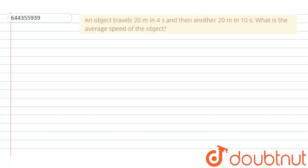Hi everyone, the question is given: An object travels 20 meters in 4 seconds, then another 20 meters in 10 seconds. What is the average speed of the object?